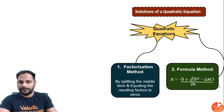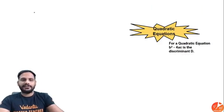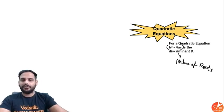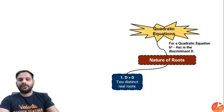For a quadratic equation, b² - 4ac is called the discriminant and it will tell us the nature of roots. From here we can find out the nature of roots.